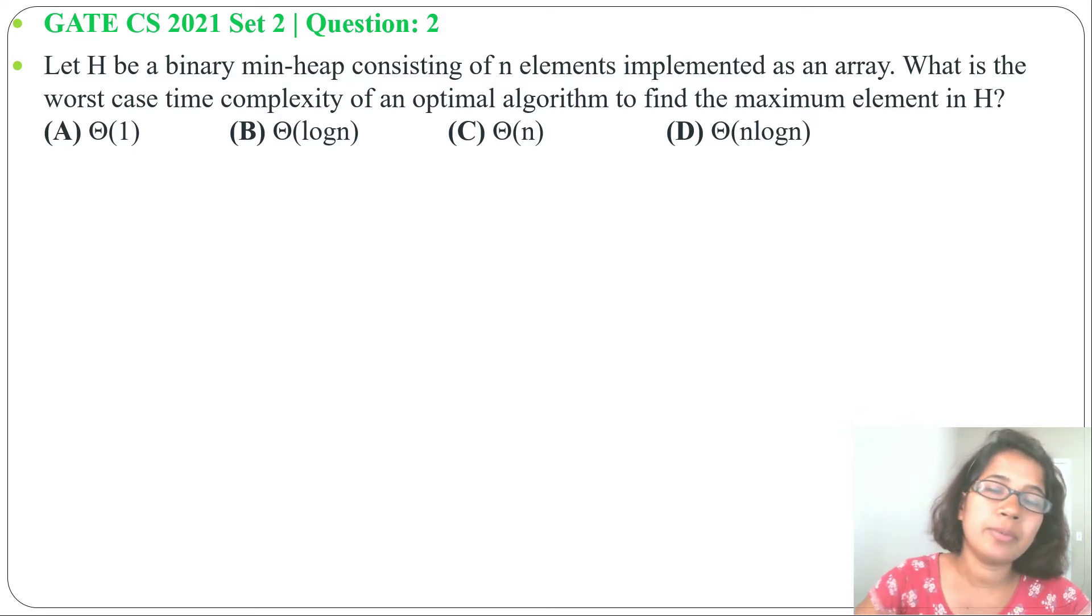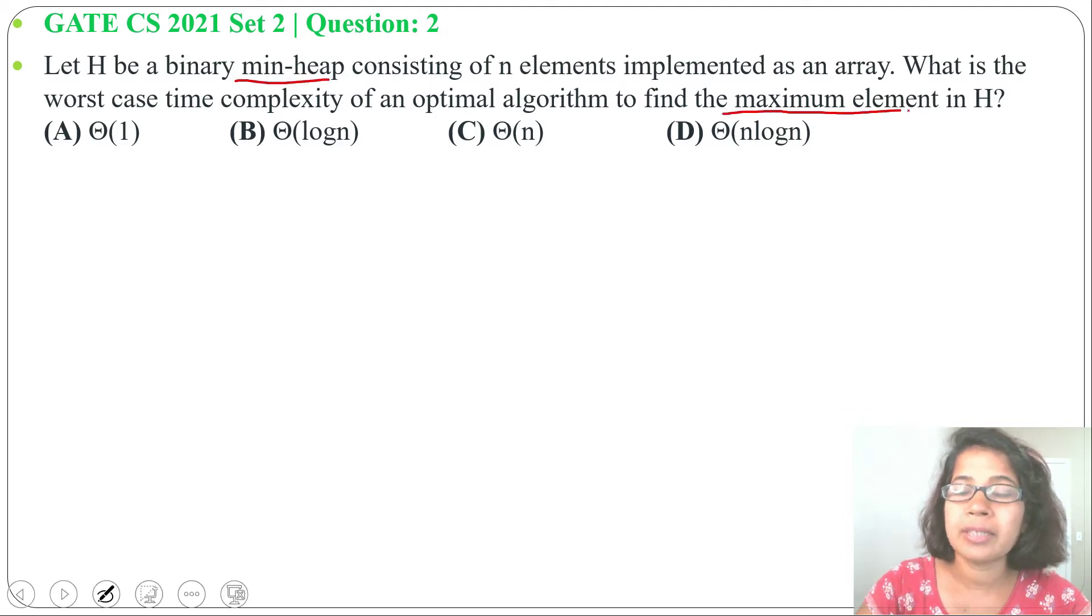In case of min heap, root contains the minimum element, whereas in case of max heap, root contains the maximum element. So here it is asking in min heap what is the time complexity to find maximum element. So maximum element is present somewhere in the leaf. Now you need to find maximum element from the leaf.